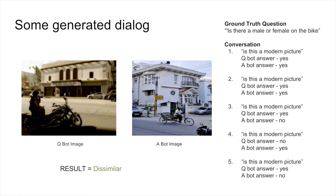Let us take a look at some generated dialogue. In this case, the question generated was not the ground truth but discriminative enough to be able to differentiate.